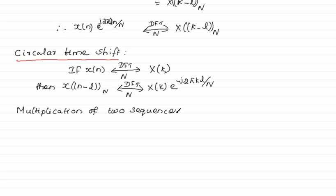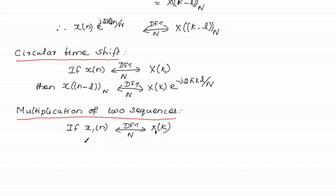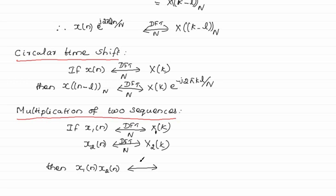Multiplication of two sequences: if the DFT of x1(n) is X1(k) and the DFT of x2(n) is X2(k), then x1(n) times x2(n), when taking N-point DFT, is equal to (1/N) times the circular convolution of X1(k) and X2(k). That is, multiplication of two sequences when taking N-point DFT is equal to (1/N) times the circular convolution of their DFTs.